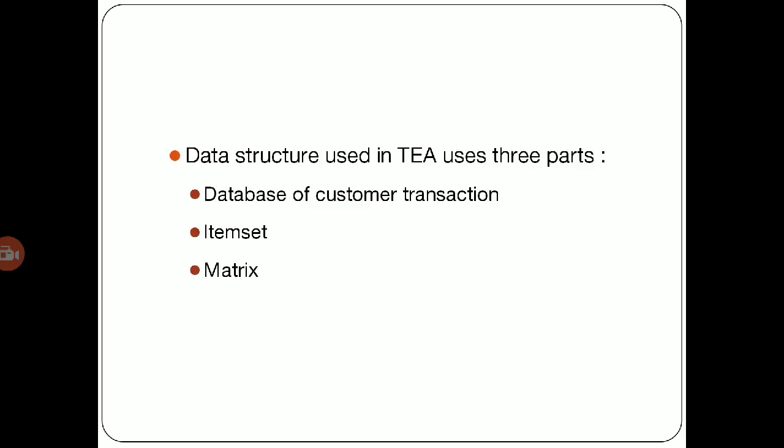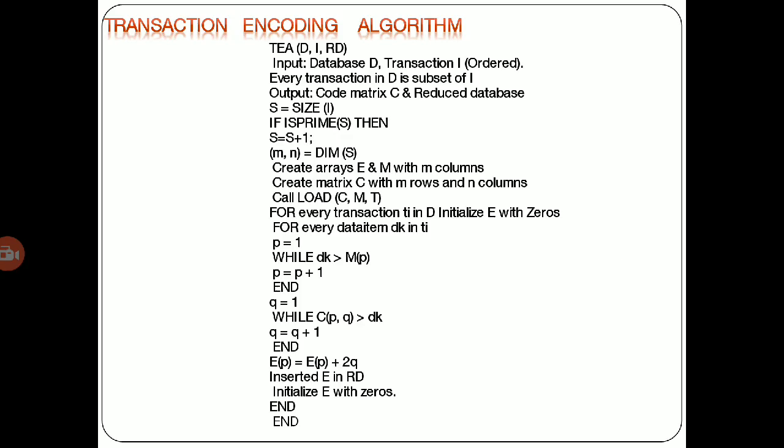Data structures used in TEA use three parts as follows: First, database of customer transactions. This is nothing but the set of records of what the customer buys and purchases. This is called a transaction performed by the system. Second, item set on which the transaction is formed. For example, any product will come into the part of the item set. And the last one is a matrix, nothing but the set of records which shows the values in row and column form.